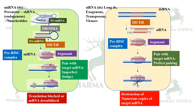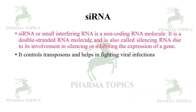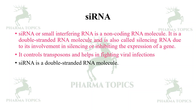The net result is destruction of numerous copies of the target mRNA. siRNA, or small interfering RNA, is a non-coding, double-stranded RNA molecule. It is also called silencing RNA. It inhibits the expression of a gene, controls transposons, and helps in fighting viral infections.